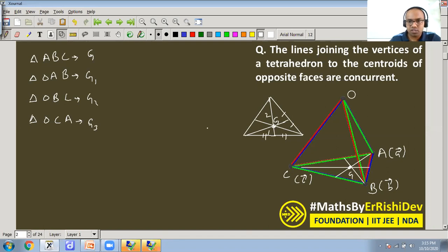So the position vector of G - we have already shown the centroid formula. What is that? That is a plus b plus c. So the position vector of G is a plus b plus c upon 3.